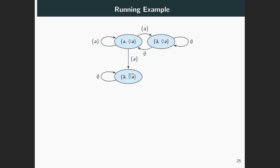Say we are in a scenario where A and eventually A are both true. What can happen next? At the next state, A may become false, and also both A and eventually A may become false. These types of evolutions to the next state are both consistent. So we have transitions from our A and eventually A state to both of those other states.